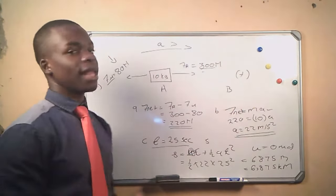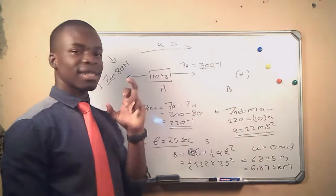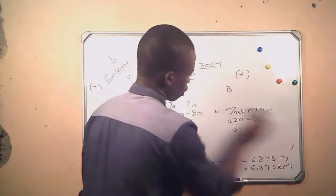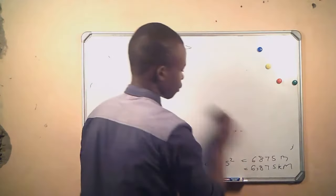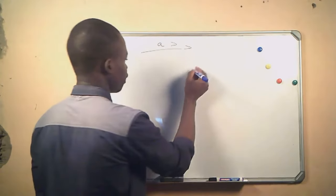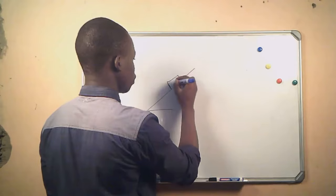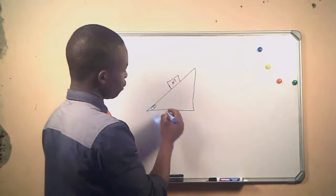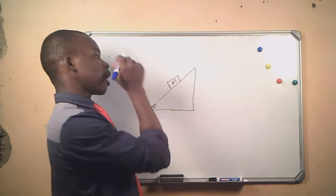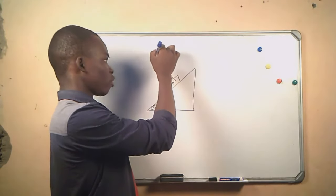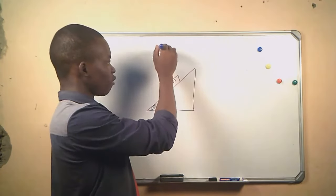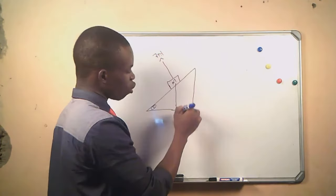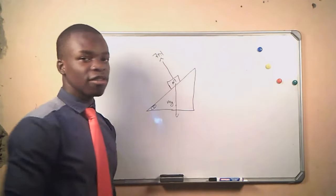That was an example of a body resting on a horizontal plane. What if we are given a question where our body is resting on an inclined plane? This is our body with mass M, and theta is the angle of inclination. Before any force is applied, the forces present are the normal force and the weight, which always acts on the negative y-axis.